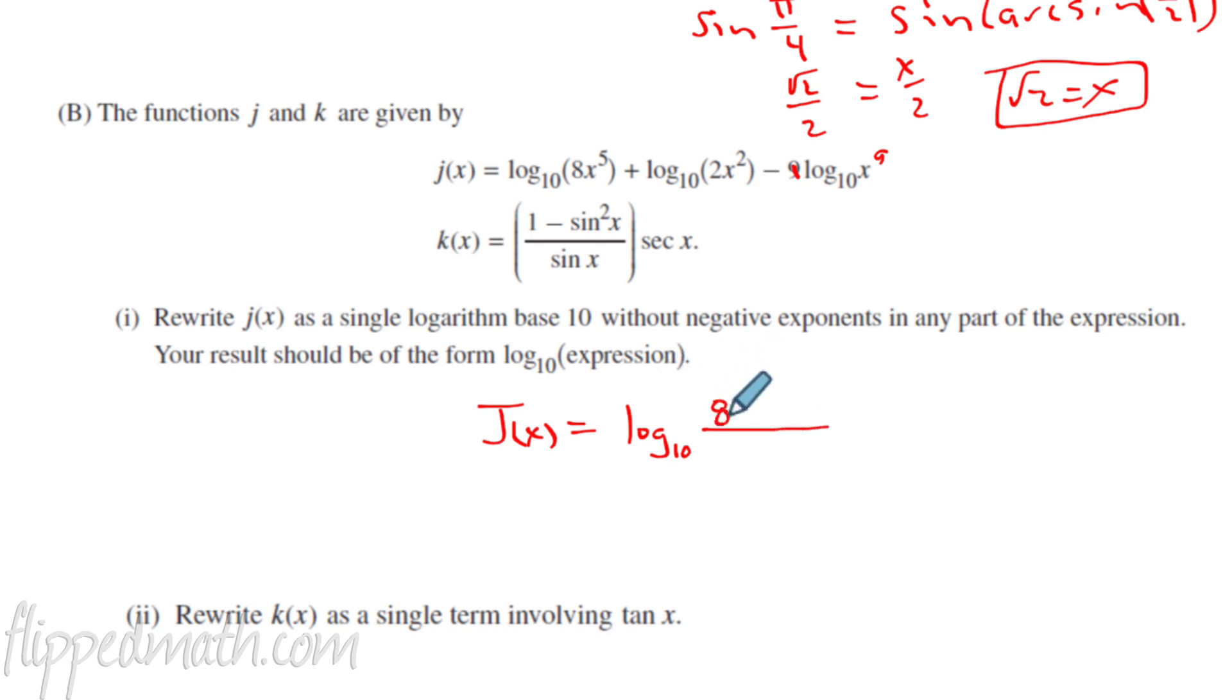So in the top, we're going to get 8x to the fifth times 2x squared. And anything that's negative ends up in the bottom of the fraction. So it's all over x to the ninth. So if we were to simplify this, we get the log base 10 of what goes in the top, 16x to the seventh. In the bottom, we have an x to the ninth still. Seven of those x's on top are going to cancel seven of these and it'll leave two. So your final answer is log base 10 of 16 over x squared. And that'll get you full credit right there.